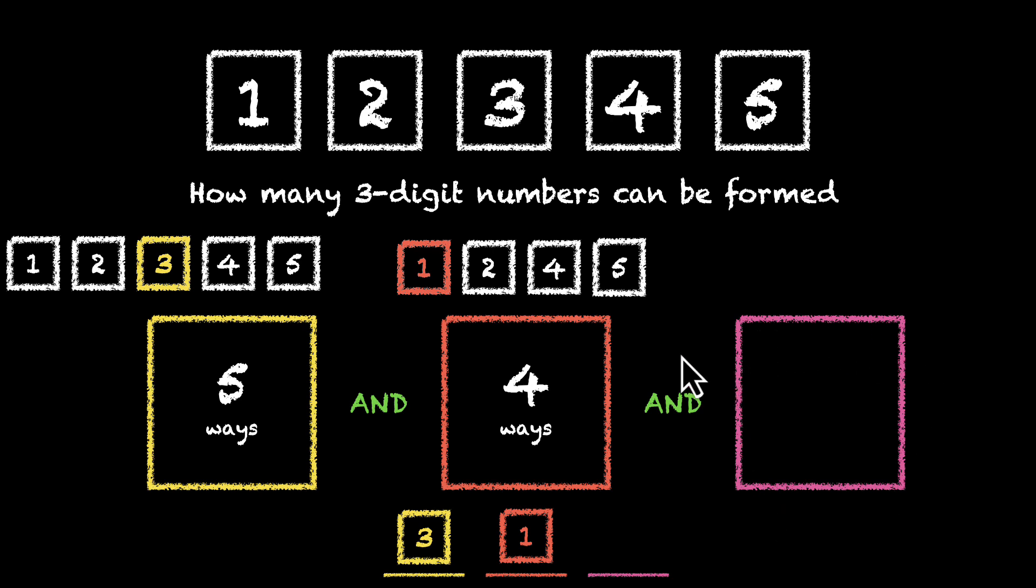And now we are moving to this pink box. How many options left? Well, 1 is gone and 3 is gone. We have 2, 4 and 5. So 2, 4 and 5. Well, that's 1, 2 and 3. There are only 3 ways. Let's say we ended up with 2 here. So 3, 1, 2. That's one of those numbers. But that's not important. What we really care about is how many ways are there to fill these boxes.